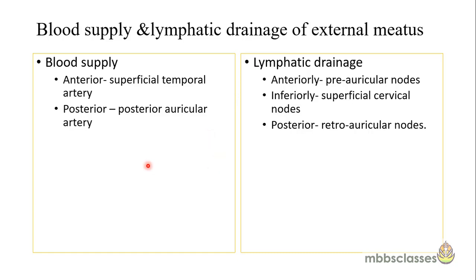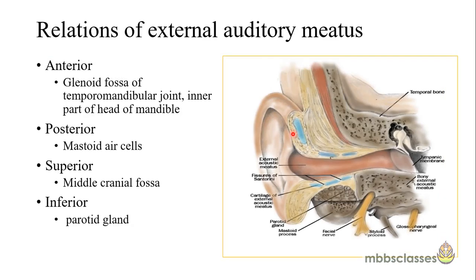The blood supply and lymphatic drainage of the external meatus share a common pattern with the auricle. Anteriorly, the external meatus is supplied by the superficial temporal artery; the posterior part is supplied by the posterior auricular artery. For lymphatic drainage, anteriorly it drains into the preauricular nodes, inferiorly into the superficial cervical nodes, and posteriorly into the retroauricular nodes.